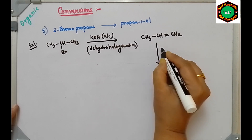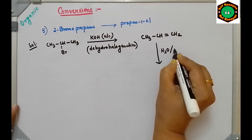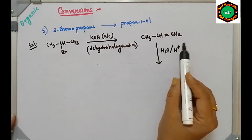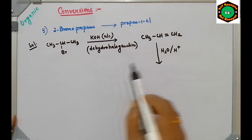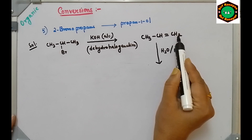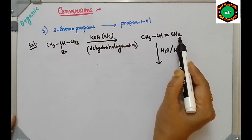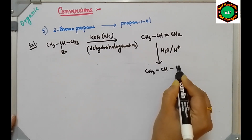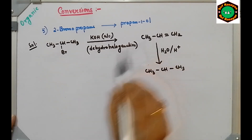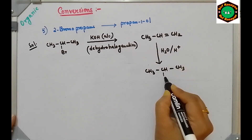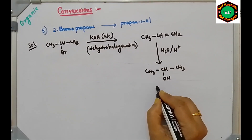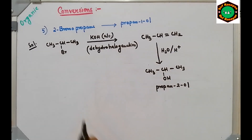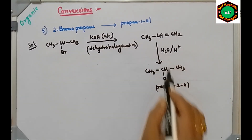If you treat propene with water in presence of acid (H⁺), Markovnikov addition takes place — H⁺ adds to the carbon with more hydrogens and OH⁻ attaches to the carbon with fewer hydrogens. You get CH3-CH(OH)-CH3, which is propan-2-ol. But we need propan-1-ol, so this is not the right approach.